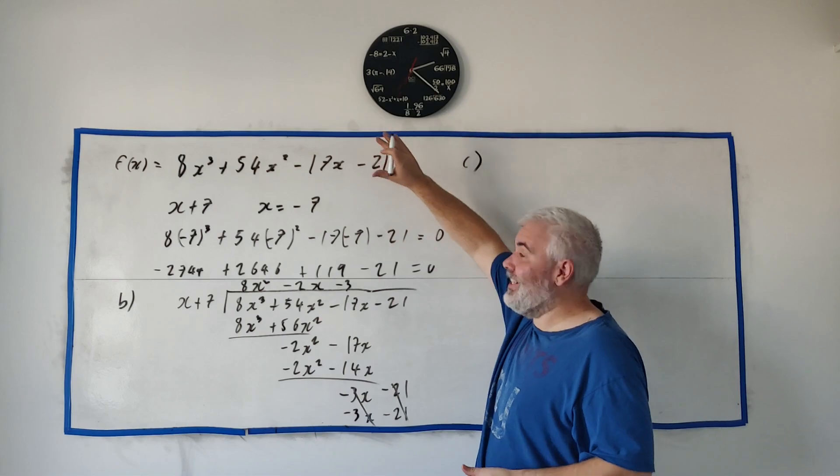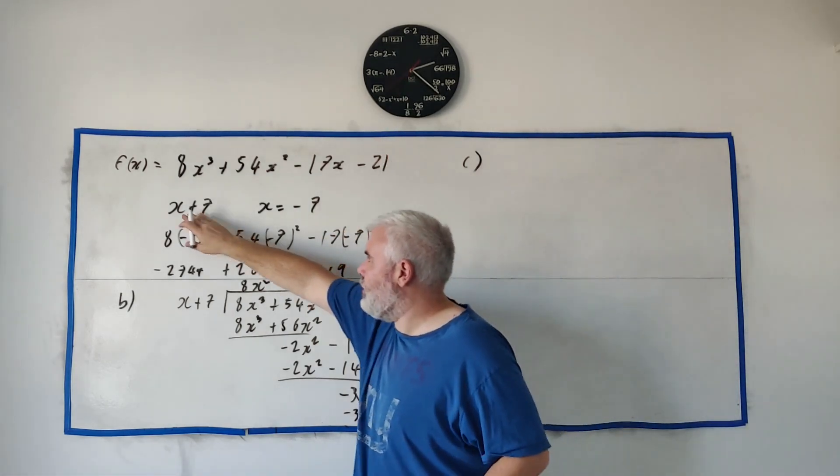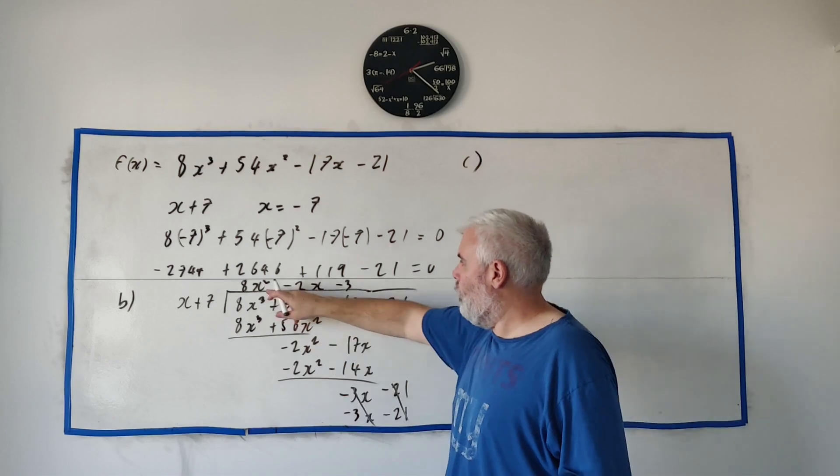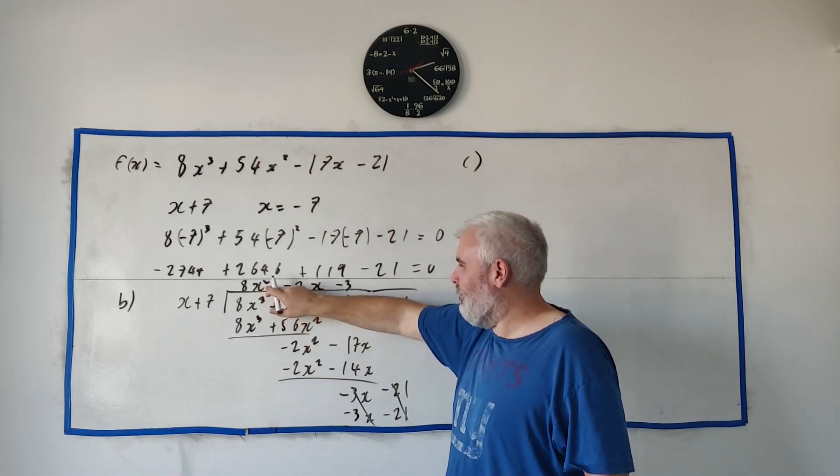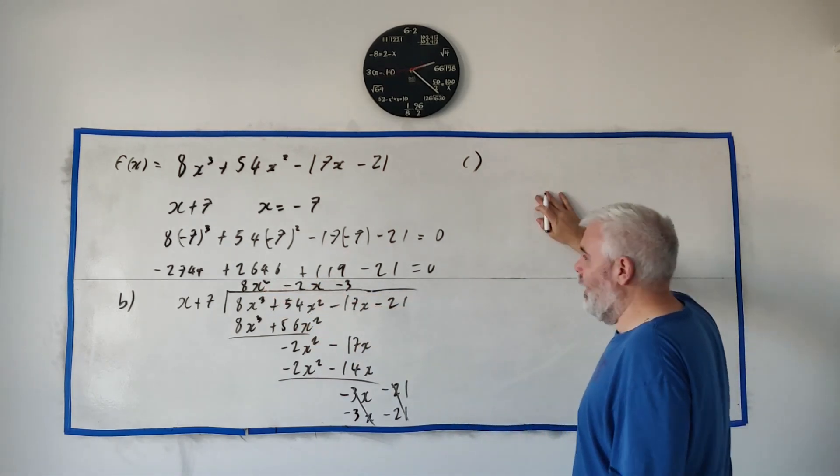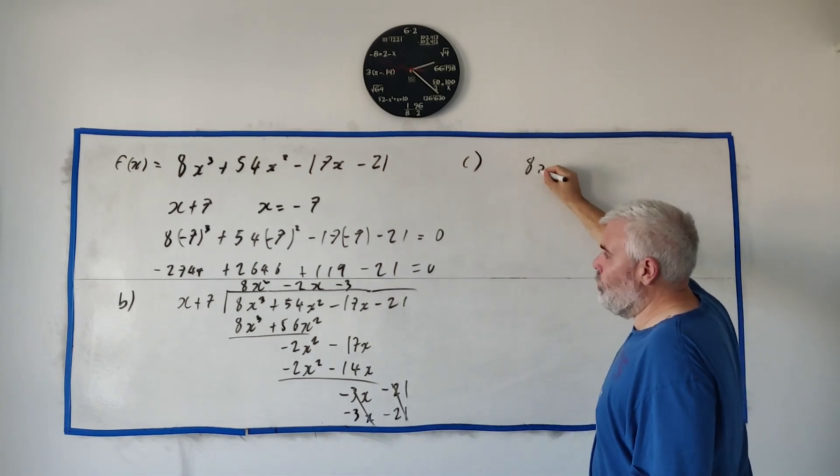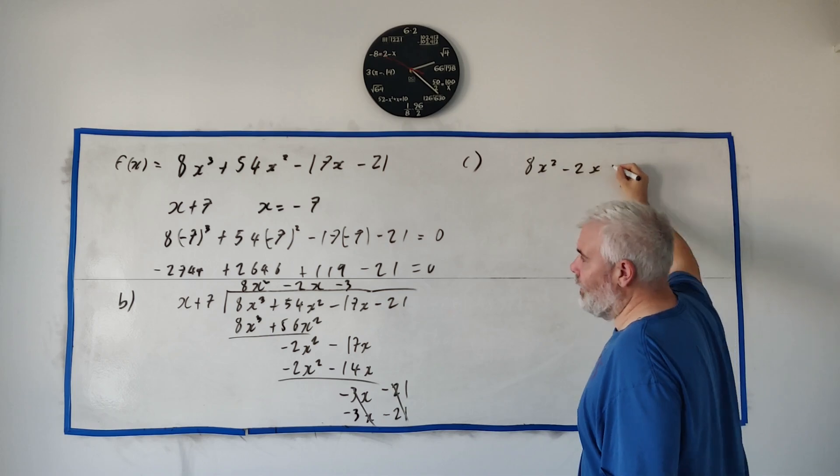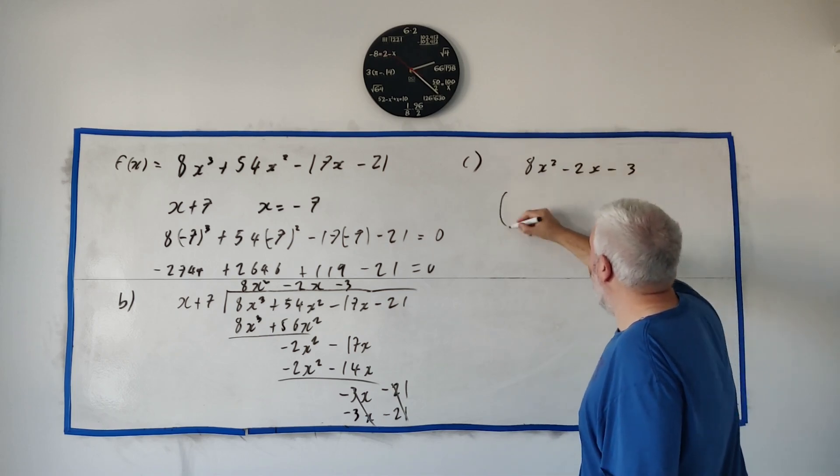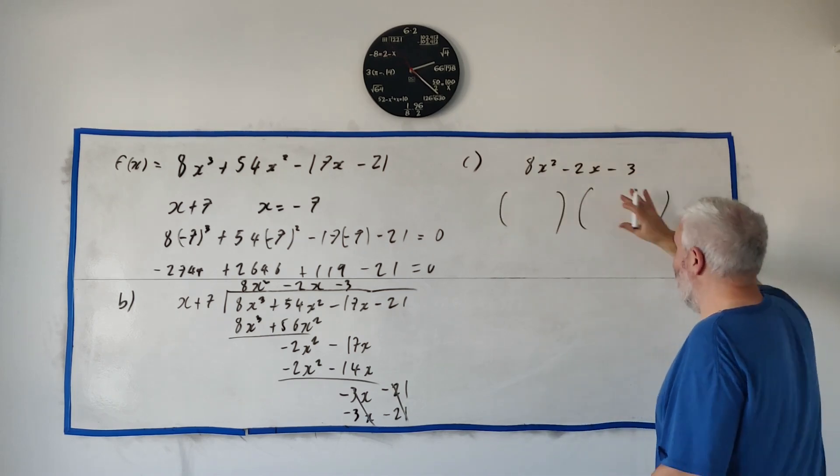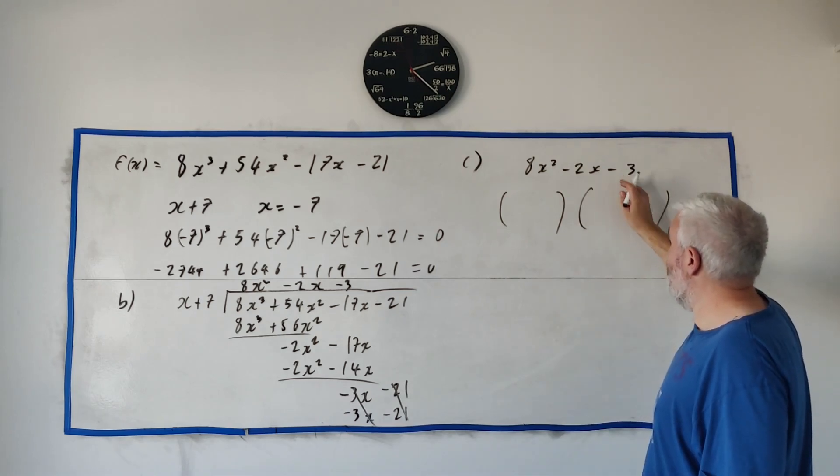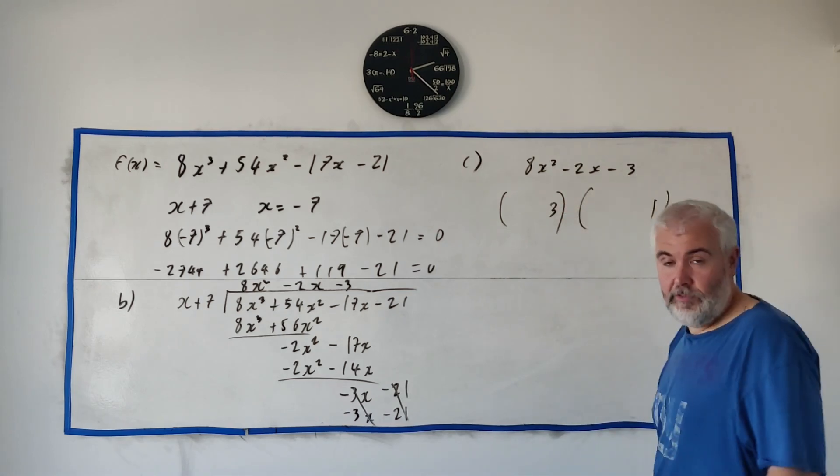So the answer we're going to use to help us answer part C we're going to factorize this equation and we've done nearly all the work. We have x plus 7 as one of the answers we have this but I'd like to factorize this quadratic first. Save me writing all the cosines I'll do it when they're still x's. So 8x squared minus 2x minus 3 and check if it factorizes. Maybe it doesn't.